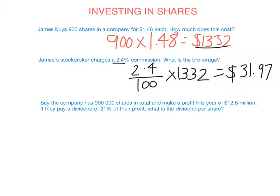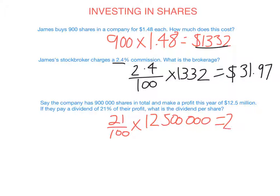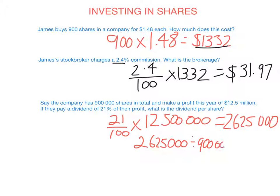Companies pay dividends because they make people want to invest — the higher the dividend, the more attractive it is. To calculate it: the company is paying 21% of their profit of $12.5 million, so the total dividend paid is 21% × $12,500,000 = $2,625,000. They then divide that equally for each share: $2,625,000 ÷ 900,000 = $2.92 (rounded). So shareholders receive $2.92 for each share they own.